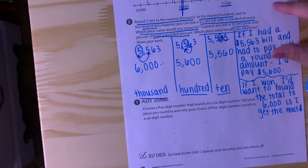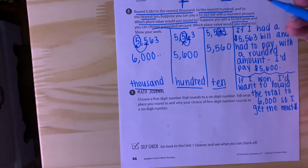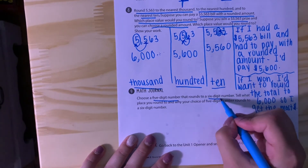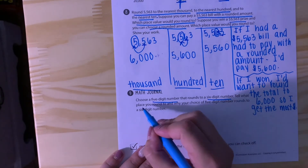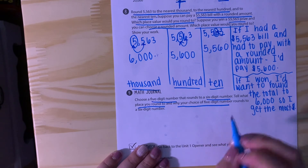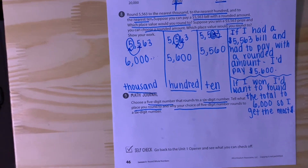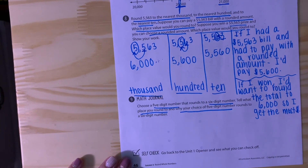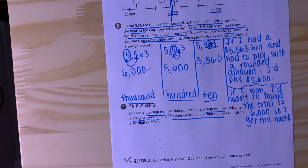Now what I want you to do is number 9 on your own, then either show me on Seesaw or live on Google Meet. You need to choose a 5-digit number that rounds to a 6-digit number and tell what place you round to and why you chose it. It looks wordy, but just think of your place value — if it helps, make a place value chart. This wraps up our workbook pages for Lesson 3. If you have any questions, please ask them today because tomorrow we will be doing an I-Ready lesson. Show me number 9 and then you are good to move on to I-Ready.